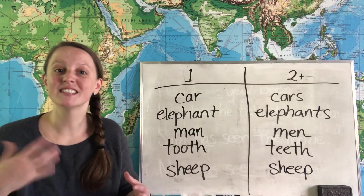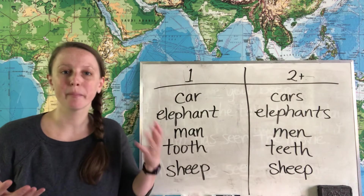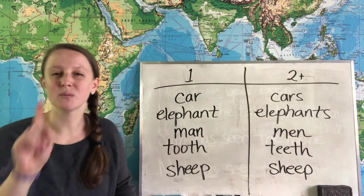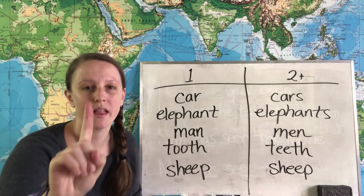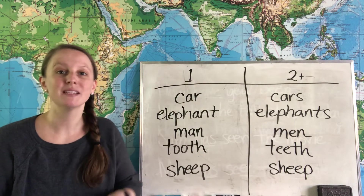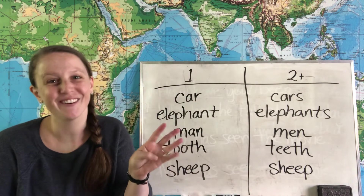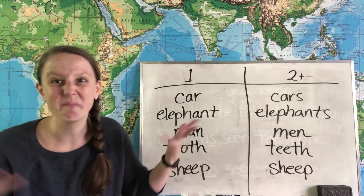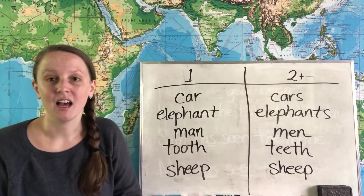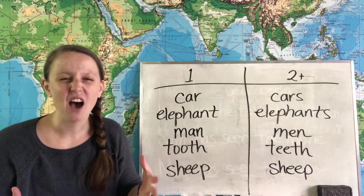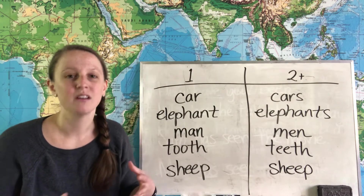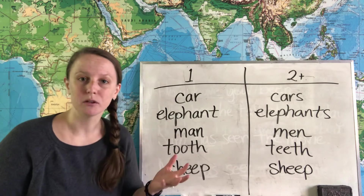In English we have singular and plural nouns. Singular means we have one of that thing, and plural means we have two or three or four or many of that thing. Let's talk about how we change a noun from singular to plural.